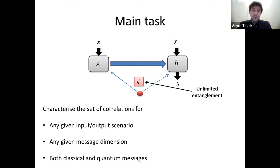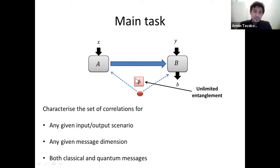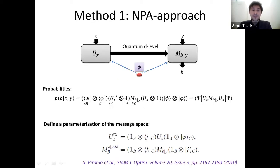Now that we know we cannot restrict ourselves to qubit entanglement or assume symmetry between the dimension of the state and channel, we want to address the general problem — that is, to characterize the full set of correlations where the entanglement dimension is potentially unlimited, so there is no assumption on the quantum source. In full generality, we address correlations in any input-output scenario, for any given message dimension, and for both classical and quantum messages. We approach this with two different methods, both based on semi-definite relaxation, but very different from each other and of independent interest.